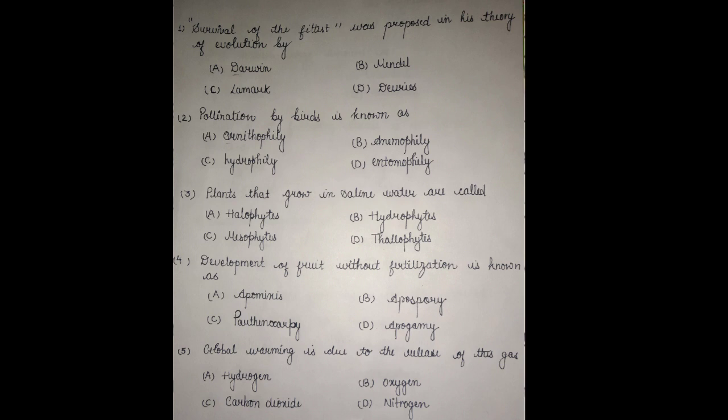Entomophilae refers to pollination by insects. Hydrophilae refers to pollination by water. And ornithophilae, as we know, refers to pollination by birds.